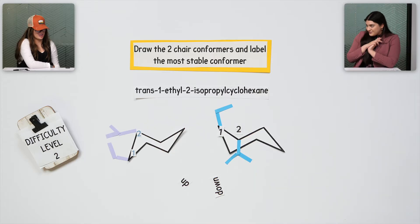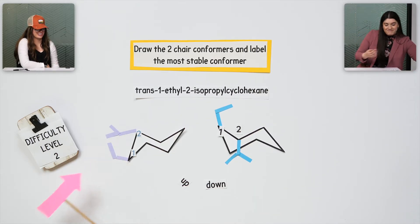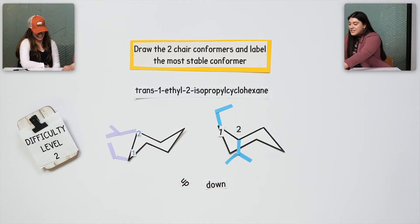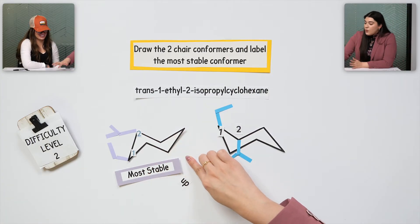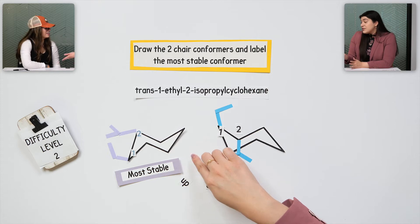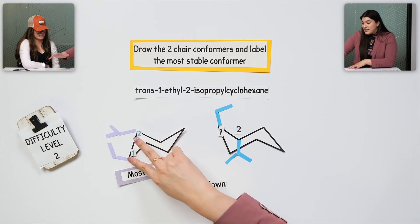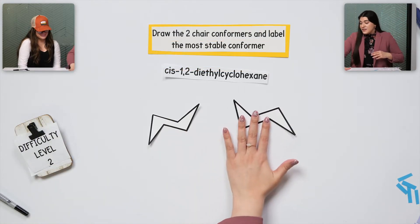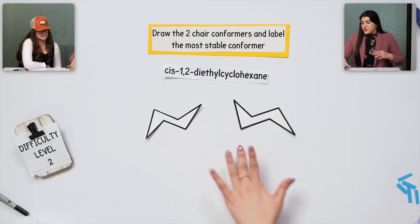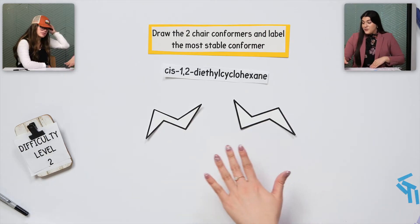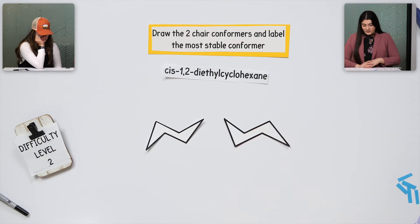Which one is more stable? This one. Why? Because it's equatorial. Exactly right. This one would be the most stable because we want the larger substituents — really even substituents in general — to be in the equatorial position. This is going to be the best. Same question: I'm still looking for the two chair conformers, doing the chair flip, and looking for the most stable. What would this look like?